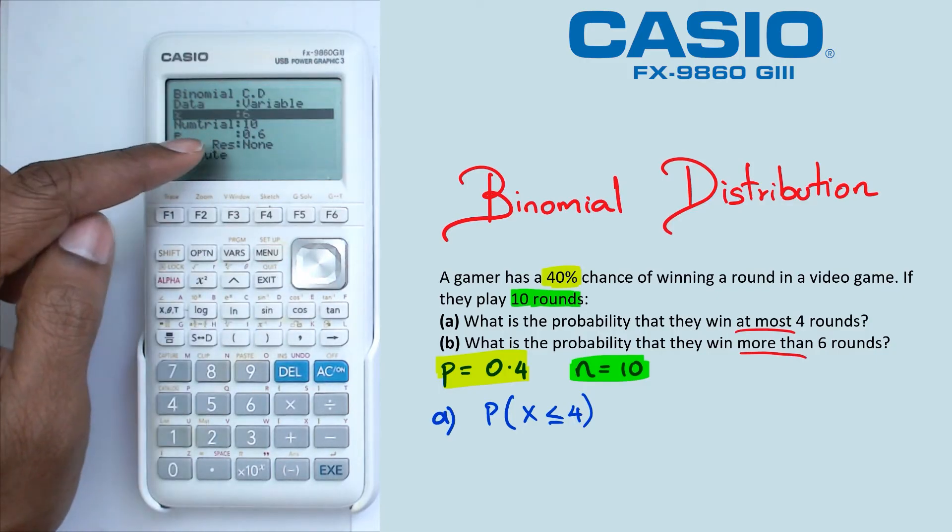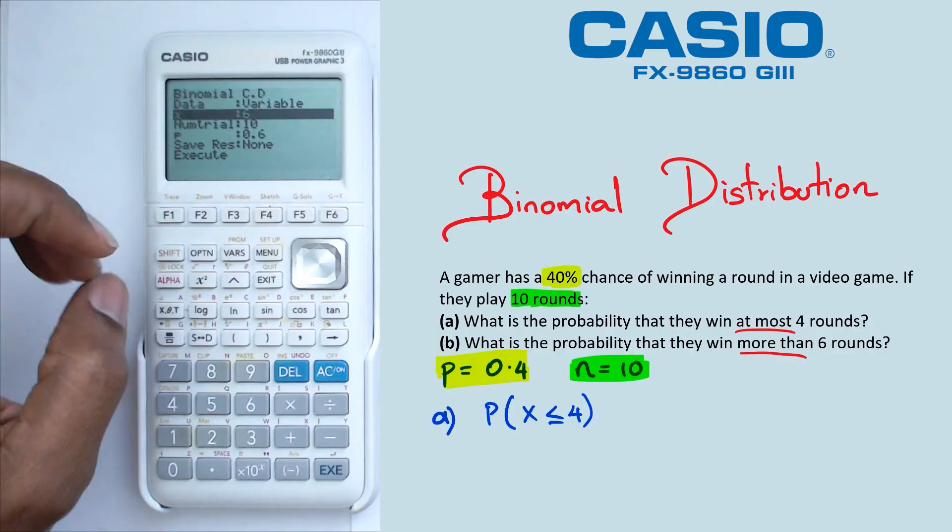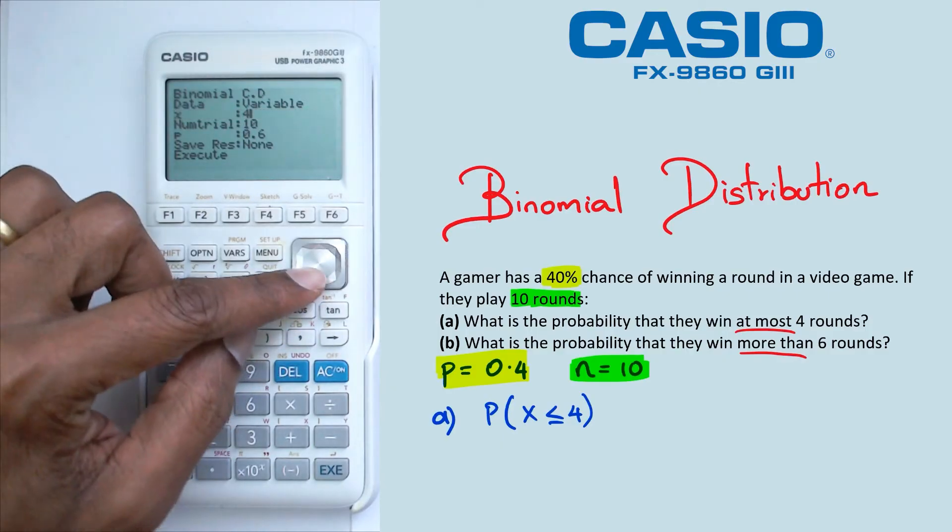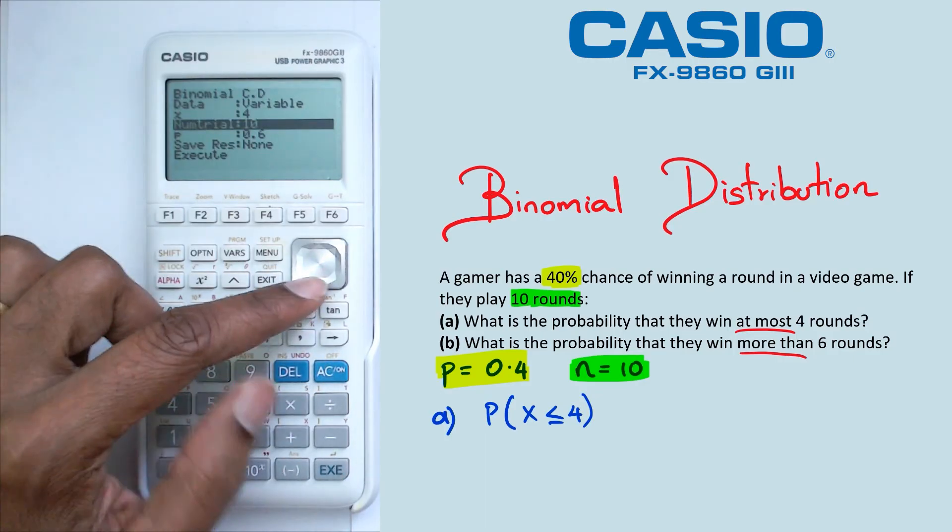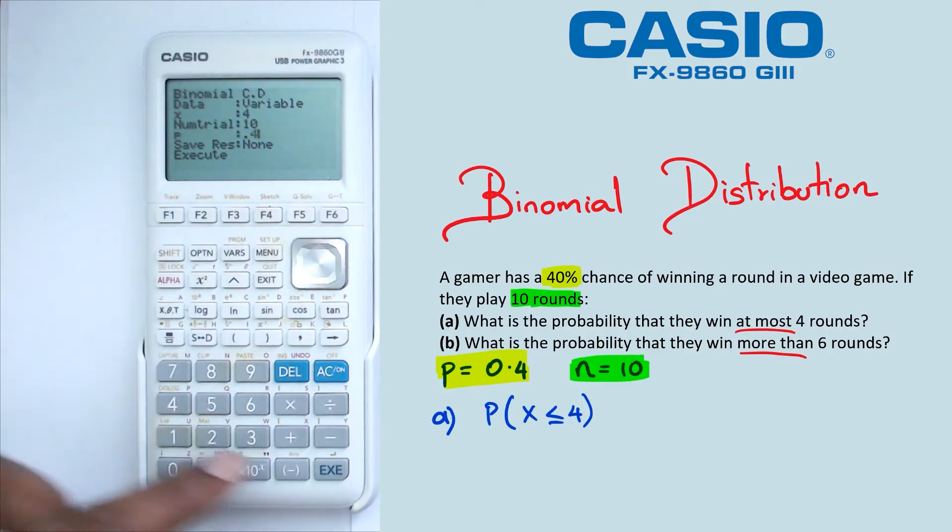We're going to go into X. Now with this question, it's actually asking for X is less than or equal to four. The calculator can only calculate up to a particular value. So if I actually put down four and go down to number of trials as N, which is 10, and then probability is 0.4, which is success.